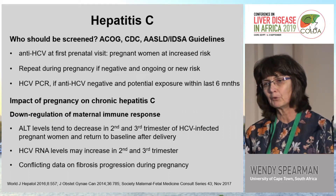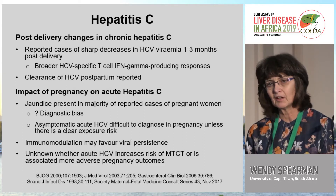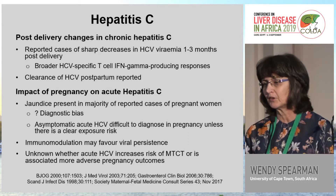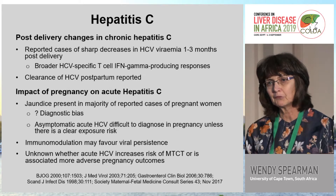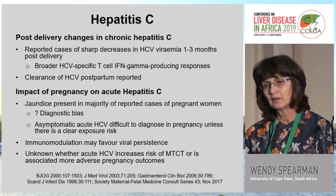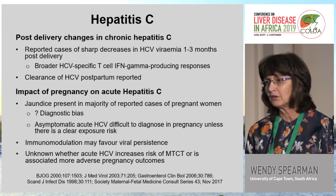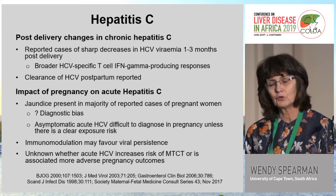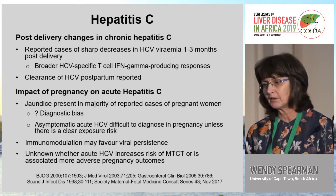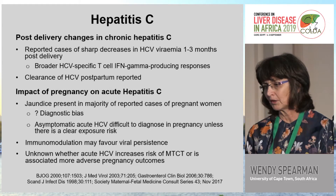Post-delivery changes in chronic hepatitis C include reported cases of significant decrease in hepatitis C viremia one to three months post-delivery, thought to relate to broader hepatitis C-specific T-cell interferon-gamma-producing responses, with even clearance of hepatitis C postpartum reported. Regarding acute hepatitis C in pregnancy, the majority of reported cases present with jaundice, though this reflects diagnostic bias. Asymptomatic acute hepatitis C is difficult to diagnose unless there has been a clear exposure risk. Immunomodulation might favor viral persistence, and it remains unknown whether acute hepatitis C increases the risk of mother-to-child transmission or is associated with more adverse pregnancy outcomes.